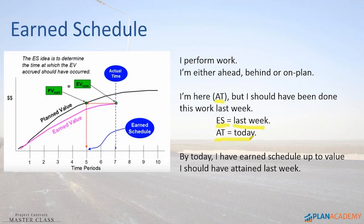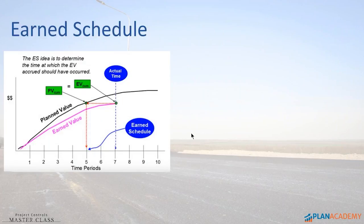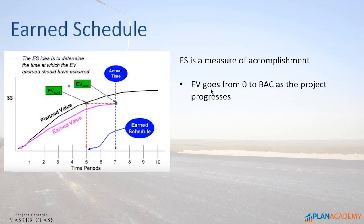ES — Earned Schedule — is a measure of accomplishment. It goes from zero to planned duration as the project progresses. Earned Value goes from zero to Budget at Completion, whereas ES goes from zero to Planned Duration — PD. The total duration of the project is called PD, Planned Duration, and we go from zero to the planned duration of the project.